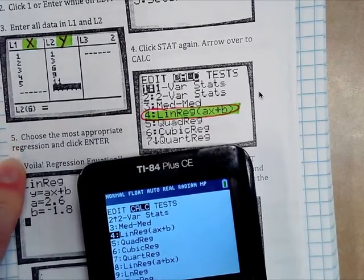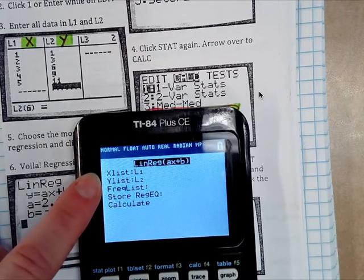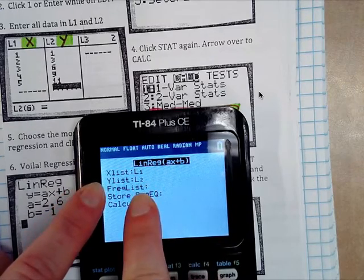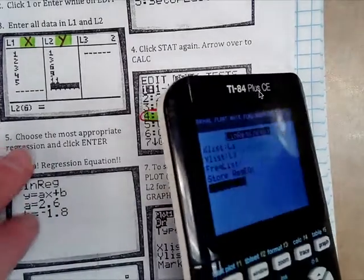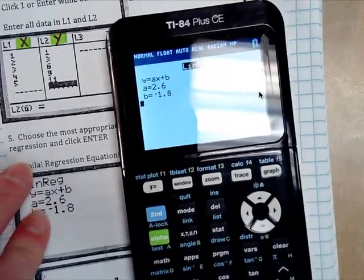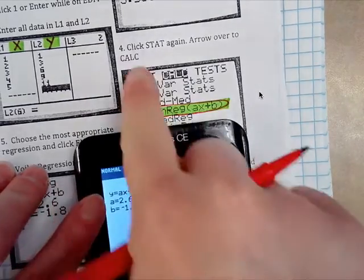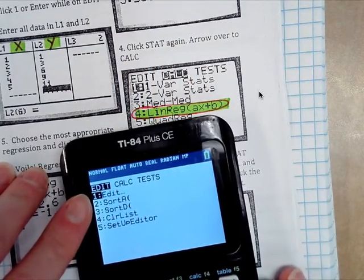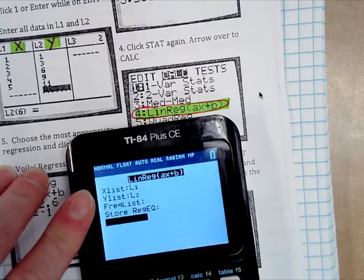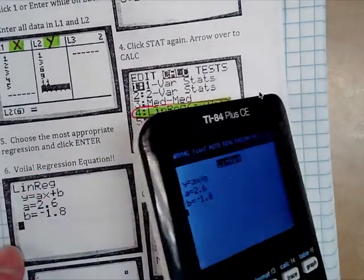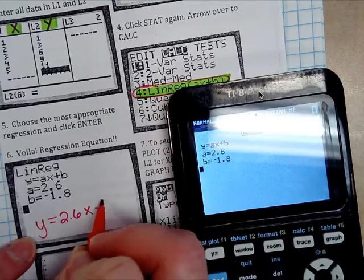Alright, so it says choose the appropriate regression. So it's linear regression, so number 4. And it says X list, X1, L1, Y list, L2, frequency list. We don't have any of that. Store regression, not going to. Just go down to calculate. Push enter. Okay, let's go back through the steps. It says click stat again, then go over to calculate, and then down to 4, which is linear regression. And then push enter until it pops up. So what this means is that your equation is Y equals 2.6X minus 1.8.